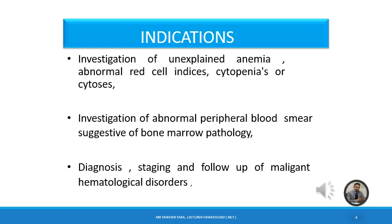In anemias, we can aspirate for megaloblastic anemia, aplastic anemia, sideroblastic anemia, iron deficiency anemia, and anemia of chronic disorder. Investigation of abnormal peripheral blood smear suggestive of bone marrow pathology is another indication — if we have an abnormal peripheral smear, we consider bone marrow aspiration or trephine biopsy.